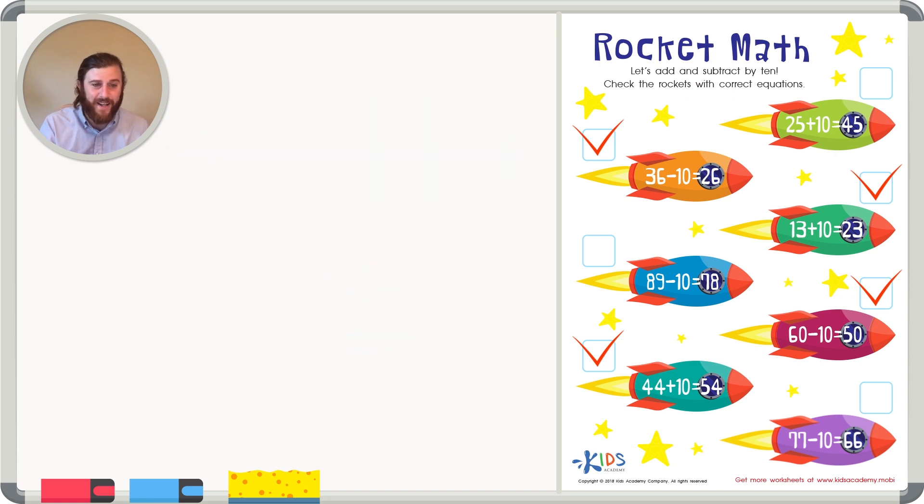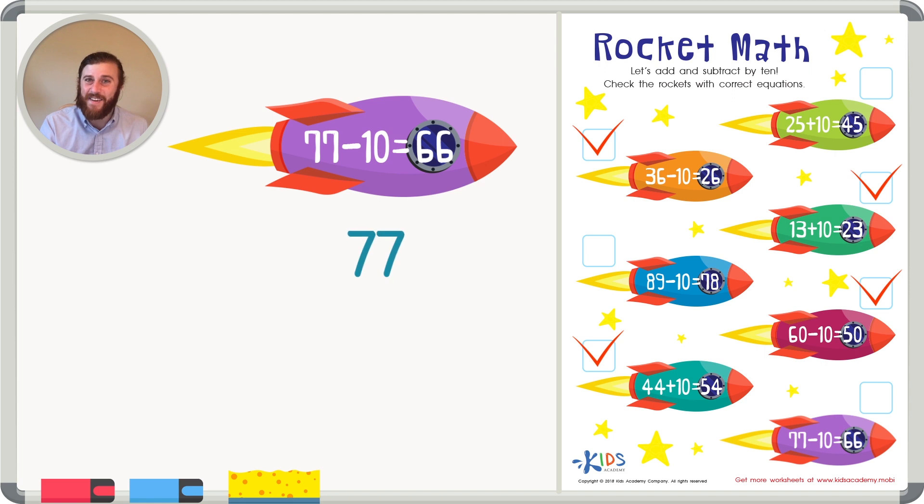And finally, our last number sentence is 77 minus 10. The rocket shows a difference of 66. I'm starting to get suspicious because I see a 7 in the ones place. So I don't think it's correct, but let's subtract just to be sure.